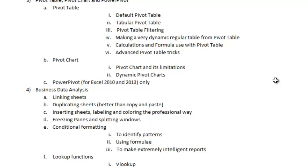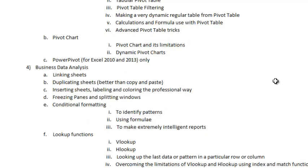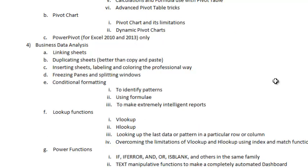Then we will move on to Module 4: business data analysis. I will show you how to link different sheets in Excel, how to duplicate sheets and the right way to do that, how to insert sheets, labeling and coloring the professional way. Freezing panes and when to do it, and also splitting windows and when to do it. Conditional formatting — how you identify patterns using conditional formats. And also using formulas to make very intelligent reports.